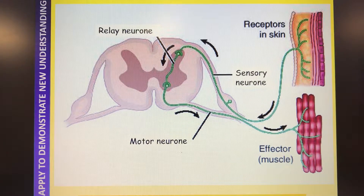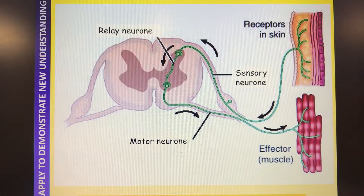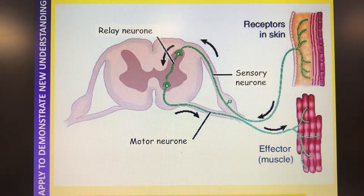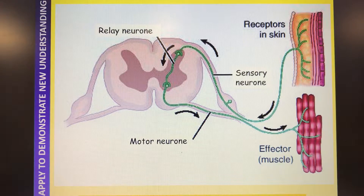The motor neuron, the relay neuron, and the sensory neuron all have electrical impulses flowing through them. This moves the information from one end of the neuron to the other. It's also important to say that the effector doesn't have to just be a muscle contracting - it could be a gland releasing a hormone. There are no other effectors you need to know about: it is just the muscle contracting or a gland releasing a hormone.